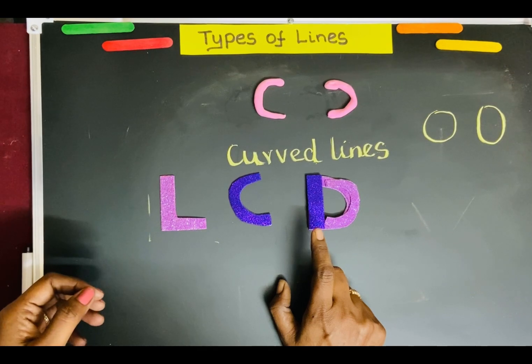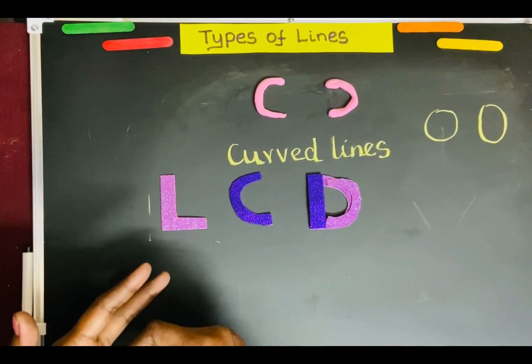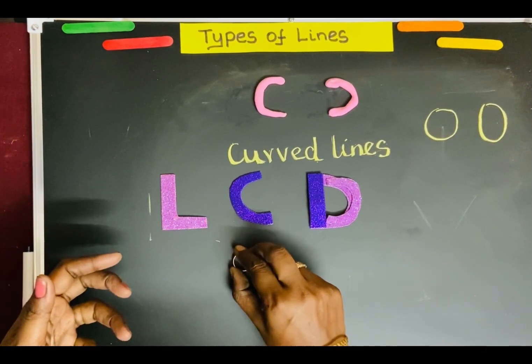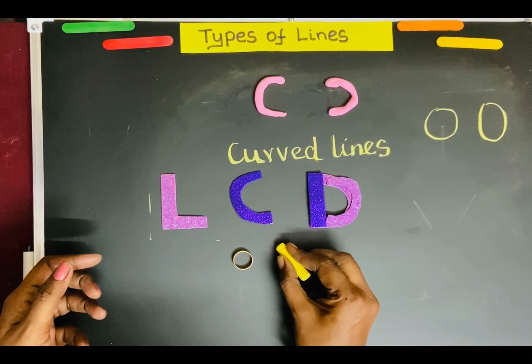Now let's look at a few objects that are made of lines. See, this is a ring. This is made out of curved lines.